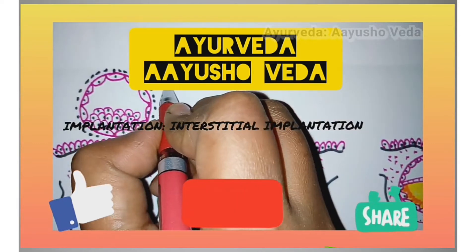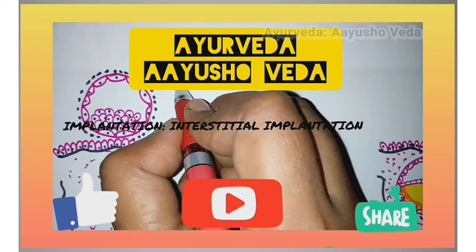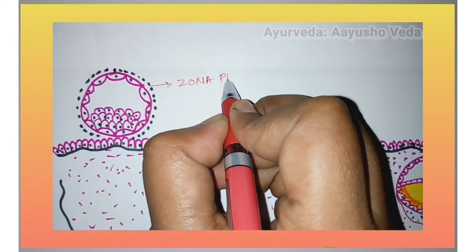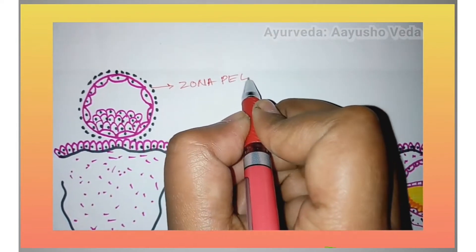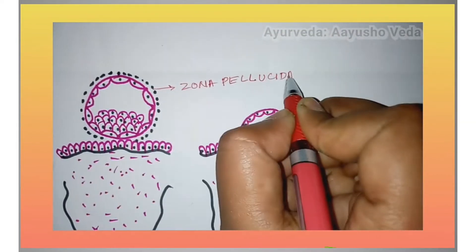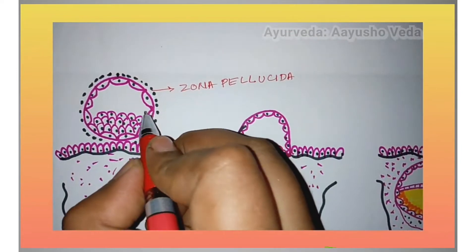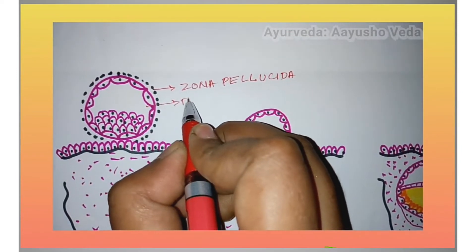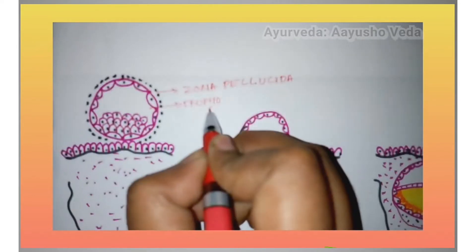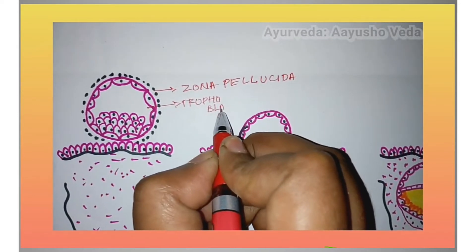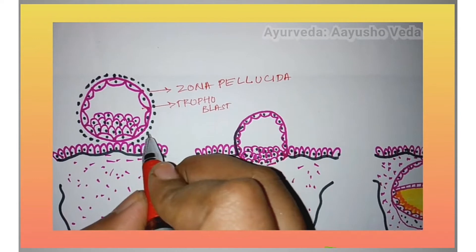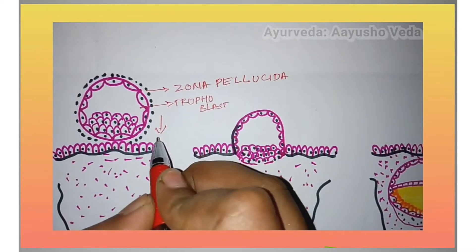The zona pellucida, the outer layer of the blastocyst which prevents the attachment of the zygote in the fallopian tube, will disappear as the blastocyst enters into the uterine cavity. Then the trophoblastic cells, which are the outermost layer of the blastocyst, will get attached to the endometrium.